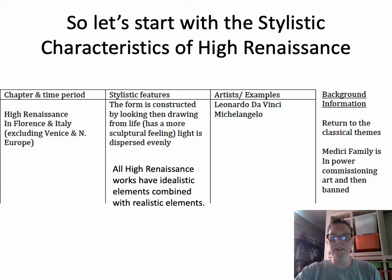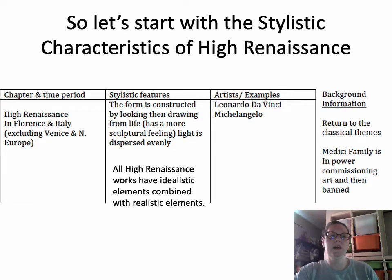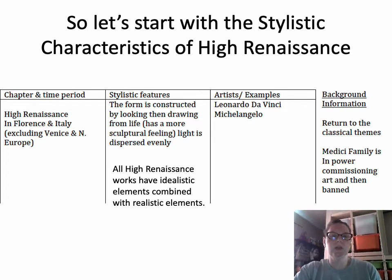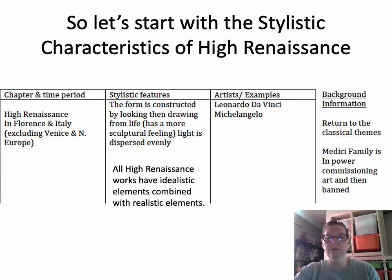We're getting ready to move into the High Renaissance. I wanted to start by sharing this chart with you. For each time period that we go over, I have gridded out a chart. If you look at this chart and go to the left-hand side, you see chapter and time period, and then I list High Renaissance in Florence and Italy, and then the stylistic features — the form is constructed by looking at a drawing, light is dispersed evenly, and High Renaissance works have idealistic elements combined with realistic elements. Then I list artists or famous pieces and whatever background information pertains.